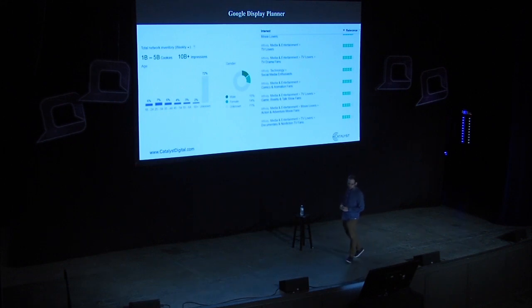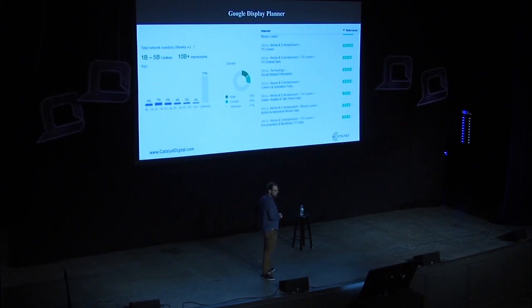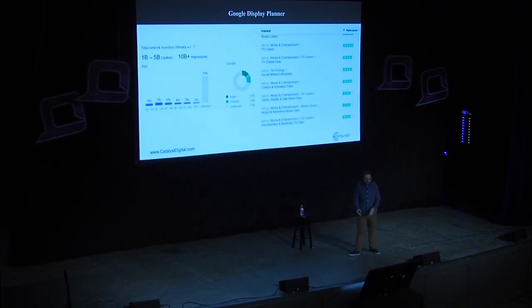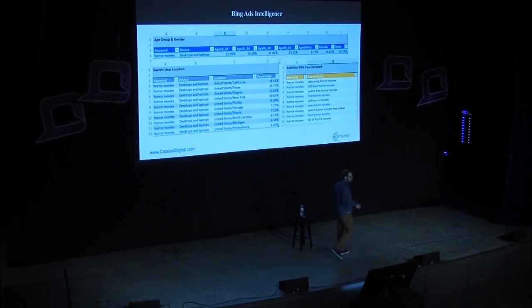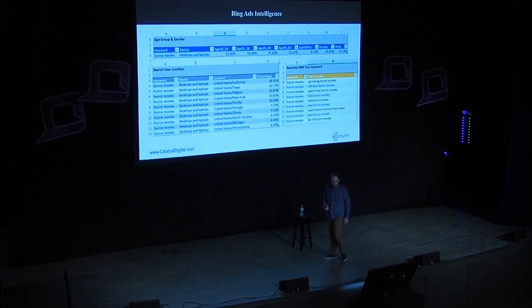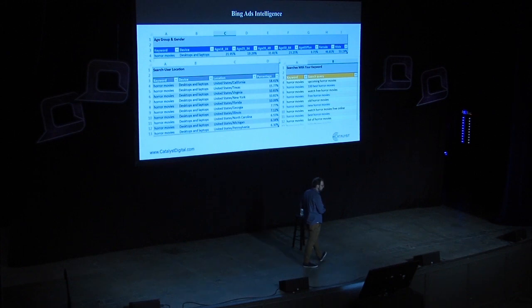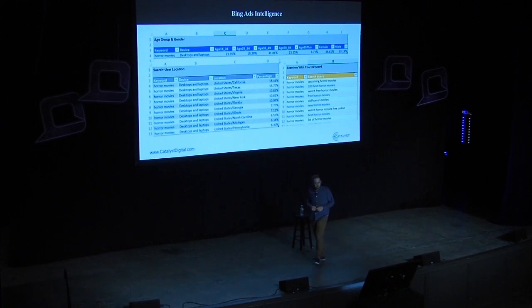Google Display Planner — again, you don't have to be using GDN. You can type in keywords and get information about people who search, say, horror movies: what are their interests, their affinity categories, and how relevant is it to your audience? You don't even have to have an existing website — just look at it by keyword. Bing Ads Intelligence is a free Excel plugin. You log in with your Bing Ads account — no active campaigns required — and it'll give you age and demographic data by keyword, plus some pretty interesting keyword generation tools.